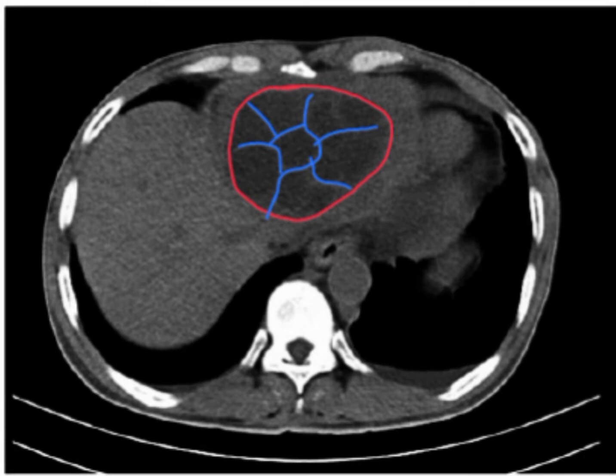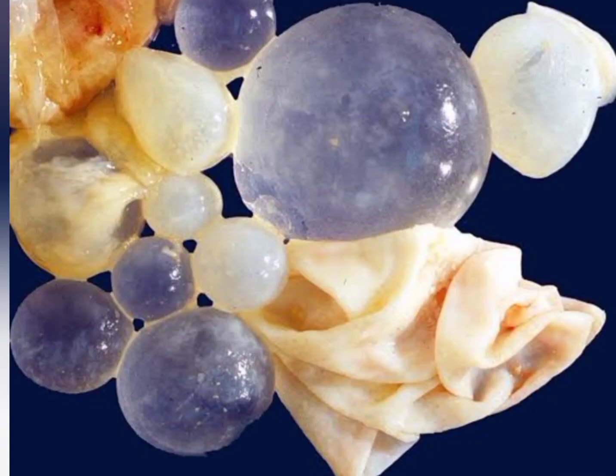You can also order ERCP or percutaneous transhepatic cholangiography, which is done in patients with a hydatid cyst with suspected biliary involvement. Typically, this condition presents in an older farmer who presents with pain in the right hypochondrium, decreased appetite, and weight loss.